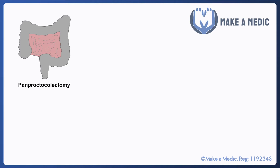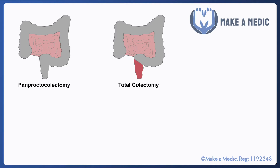There are a number of different terms used to describe more extensive operations that remove all or most of the colon and rectum. A pan proctocolectomy, as the prefix 'pan' suggests, takes absolutely everything — the colon and the rectum — from the ileocecal valve all the way down towards the anus. This tends to be done for fairly diffuse diseases that affect the entirety of the colon, such as familial adenomatous polyposis and ulcerative colitis.